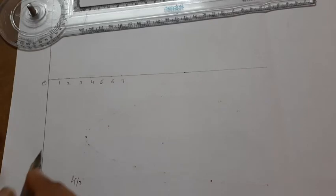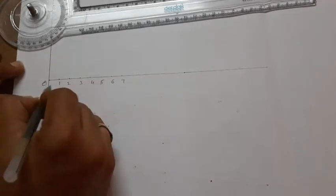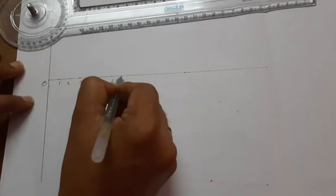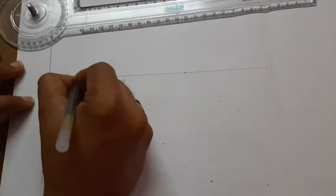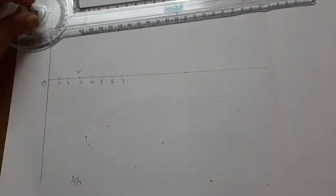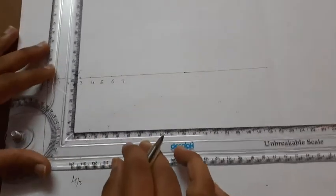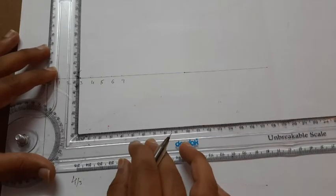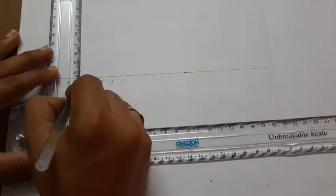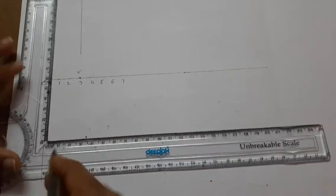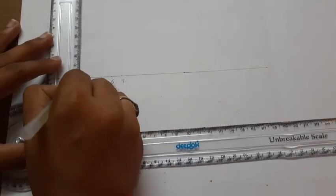So 4 by 3, we are going to mark the directrix. This is the focus, and this is the vertex.